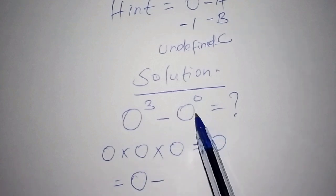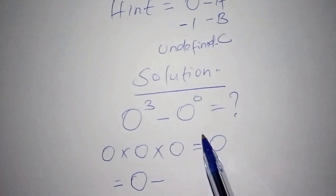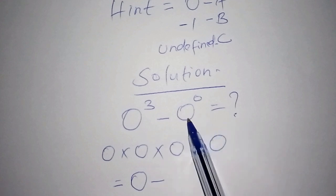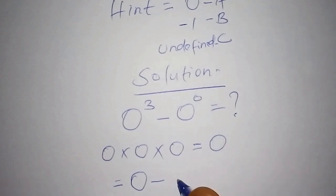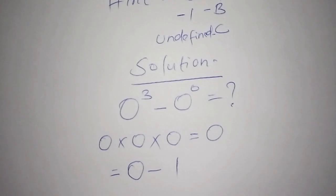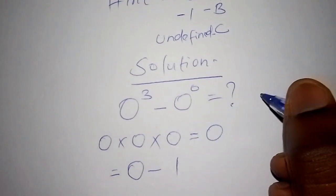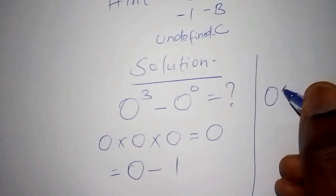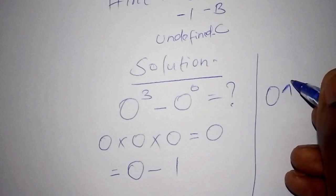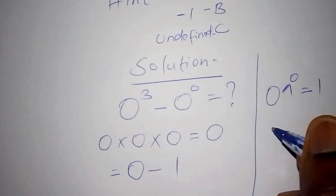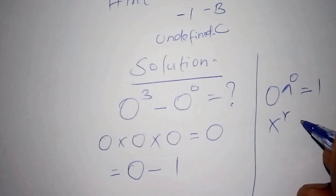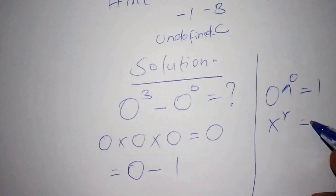Next, we have 0 to the power of 0. You can work this out using a calculator. When you key in 0, then raise it to the power of 0 — whether using a dedicated power button or an x-to-the-y function — the calculator gives you positive 1. So 0 to the power of 0 equals 1.